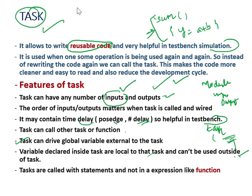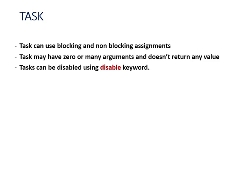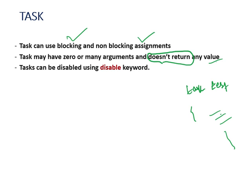Local variables cannot be used outside of the task. Tasks are called with statements, not in an expression like a function. A task can use both blocking and non-blocking assignments. Tasks may have zero or many arguments and do not return any value — this is important to remember. Functions return a value, but tasks do not.